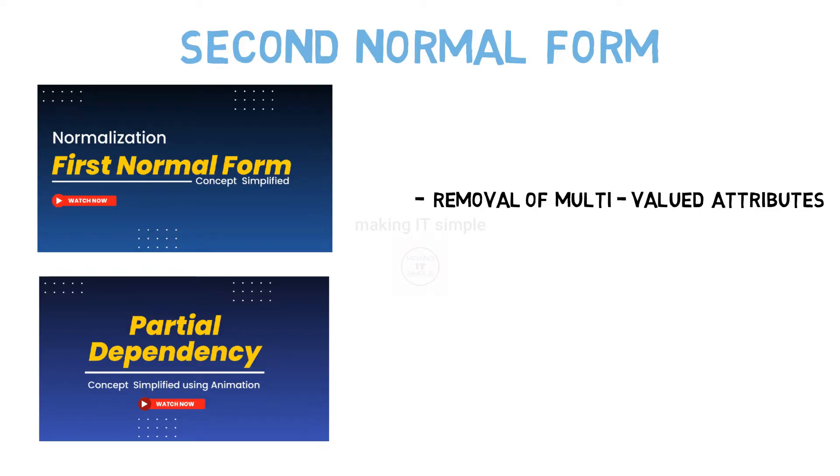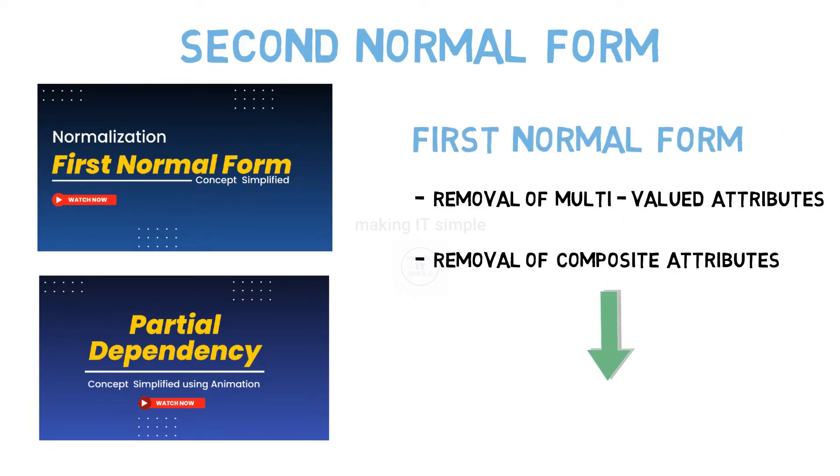After removing multivalued and complex attributes in first normal form, we are going to normalize the table furthermore in second normal form. So without wasting any time let's start after a short intro.